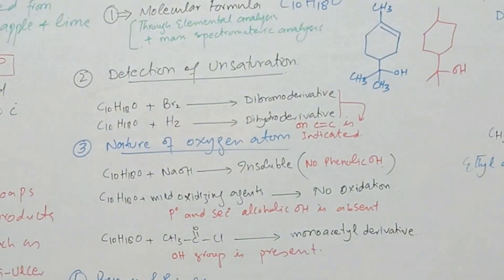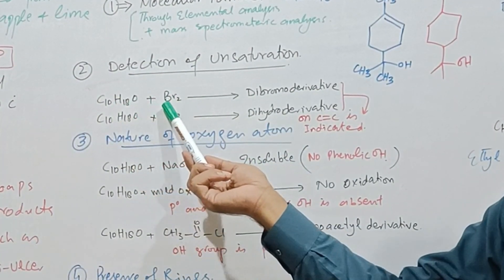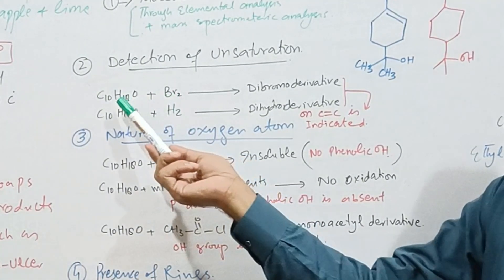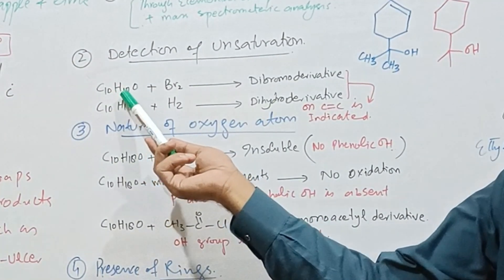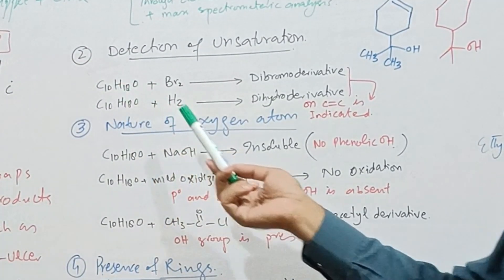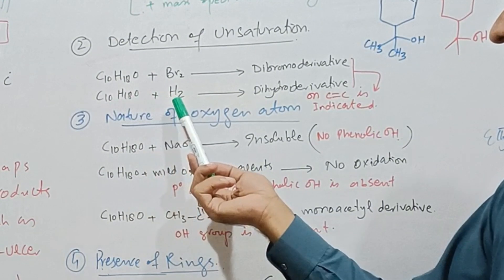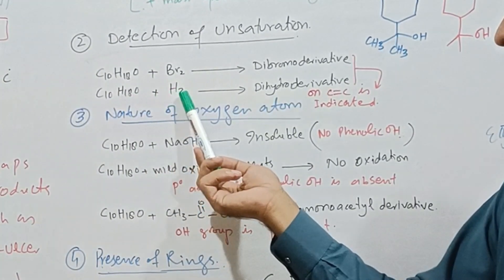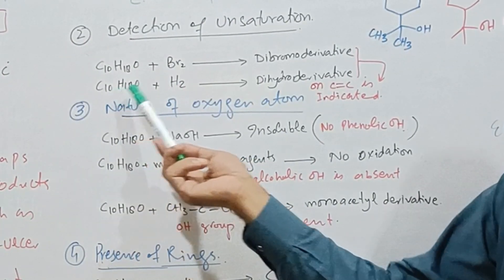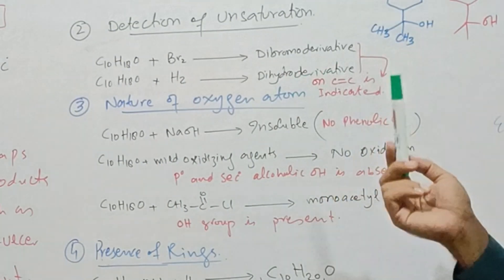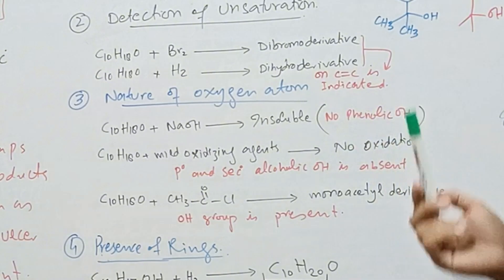In structural elucidation, first is detection of unsaturation. When alpha-terpineol is treated with bromine, one molecule of bromine is added, showing one double bond is present between carbon atoms. Similarly, dibromo derivative is obtained. With hydrogenation, one molecule of hydrogen per molecule is added to obtain dihydro derivative. These results show one carbon-carbon double bond is present.